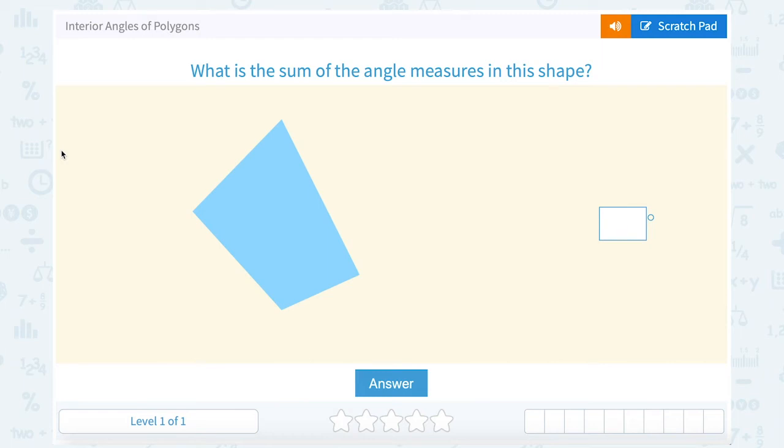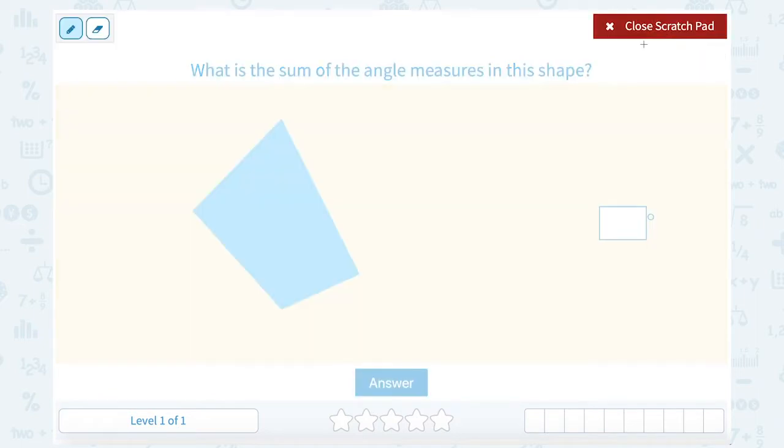We're going to take a look at how to find the interior angles of polygons. The first question says, what is the sum of the angle measures in this shape? Notice this shape has four sides. In other words, it's a quadrilateral. Quadrilateral means a shape with four sides.